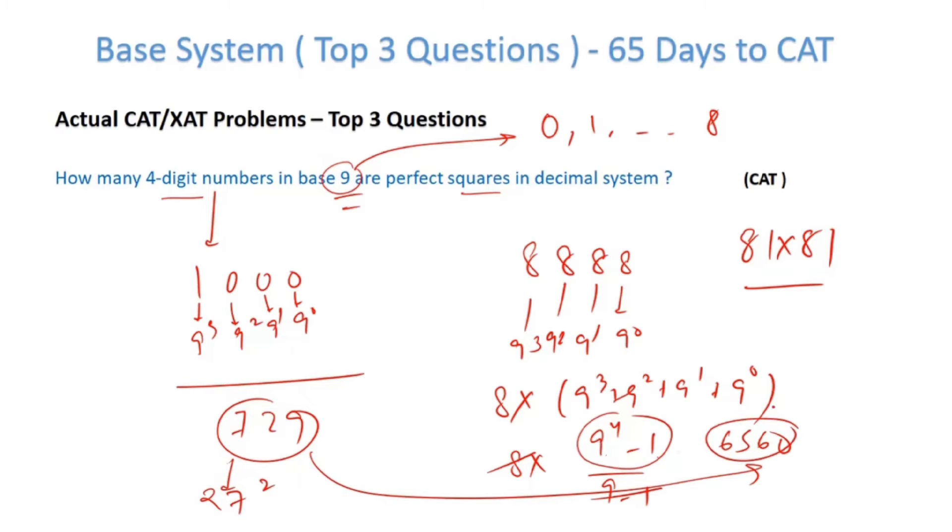From 729 to 6560: 729 is 27², 6560 is 1 less than 81². So how many squares till 80²? From 27 to 80, that's 80 - 27 + 1. Why +1? Because we count 27 also. So 54 numbers.